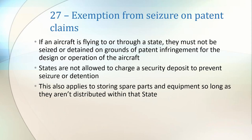Article 27 is a slightly tricky one. It protects aircraft flying to or through other states from being seized or detained on the ground of infringing patents held by the state being flown into. Additionally, the article specifically mentions that states are not allowed to try and charge a security deposit to be allowed transit without seizure or detention. Finally, it extends this protection to spare parts and equipment that may be stored in another state, so long as they aren't sold within that state or commercially exported.